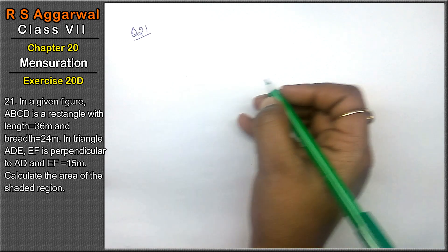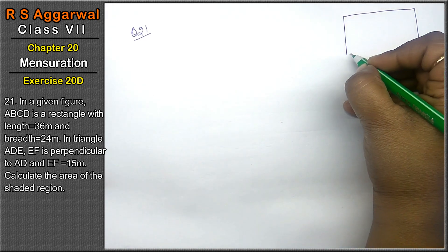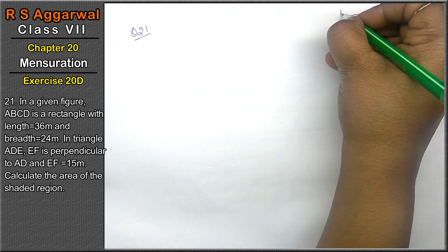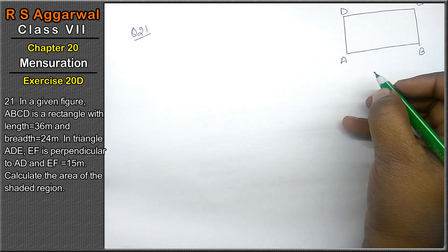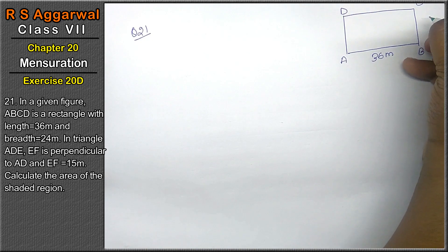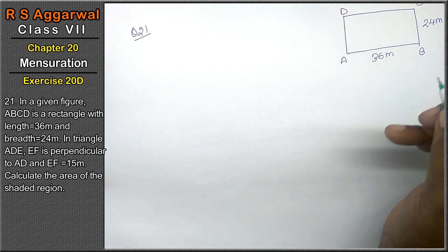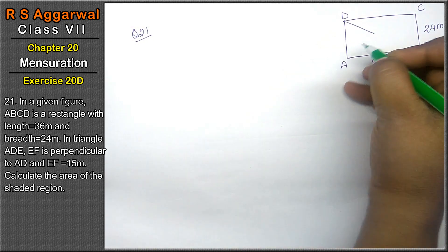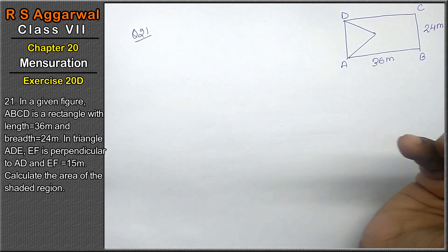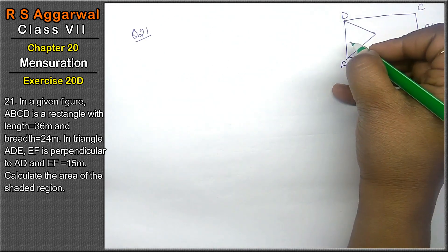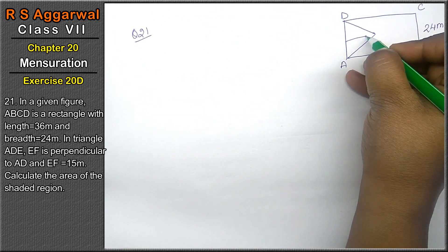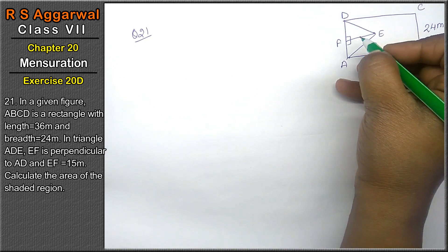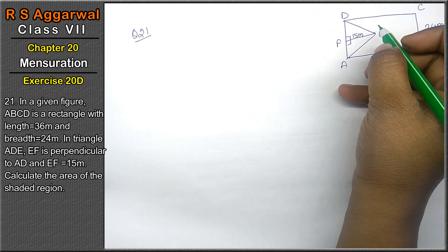In the given figure, ABCD is a rectangle with length 36 meters and breadth 24 meters. In triangle ADE, EF is perpendicular to AD, and EF is 15 meters. Find the area of the shaded region.